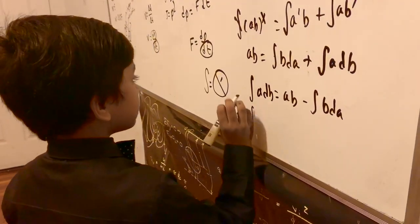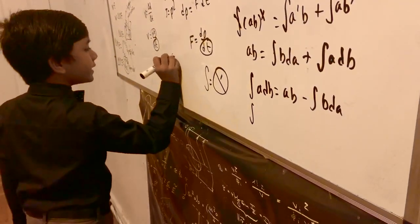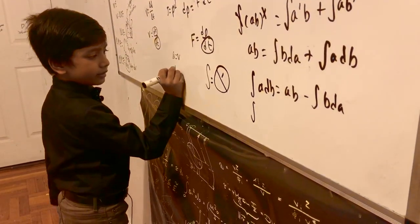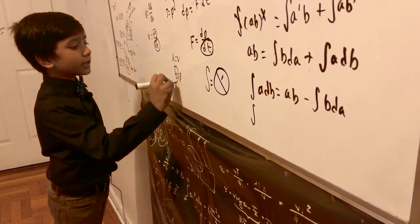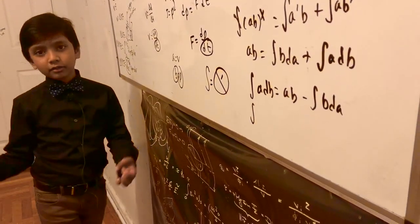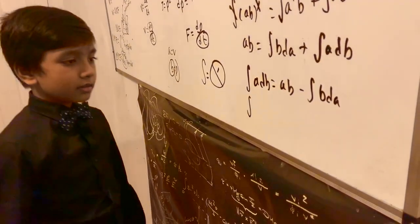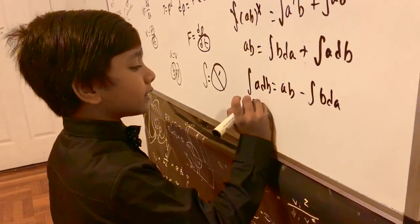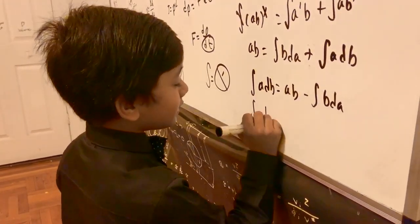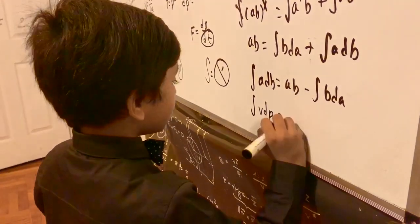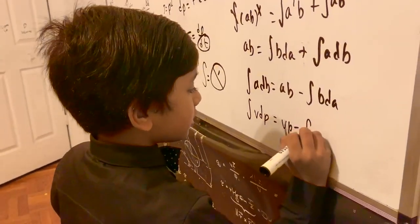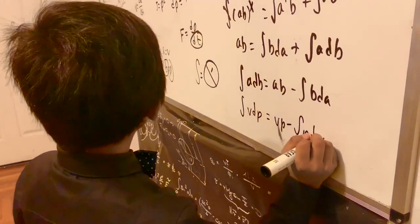So let's say that a is equal to v and b equal to p for the sake of it. Because, come on, p looks like b. If you tilt b upside down, it looks like p. Now that gives us v d p is equal to v p minus integral of p d v. So now, that's what it says. So let's wrap up.